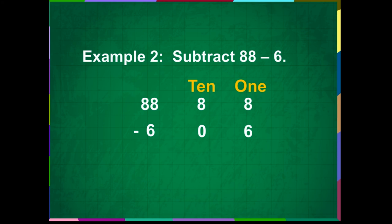Let us first subtract from the ones place. Draw 8 small vertical lines beside it. Now, cross 6 lines. Count the remaining lines. It is 2. Write 2 in the ones place.